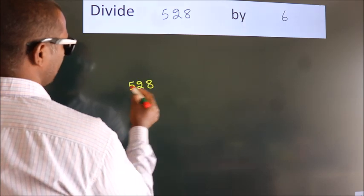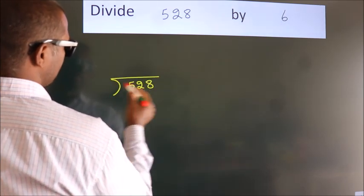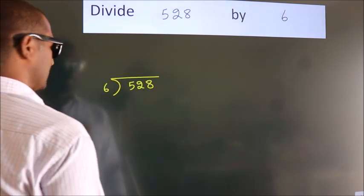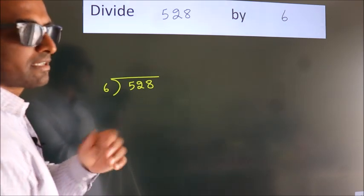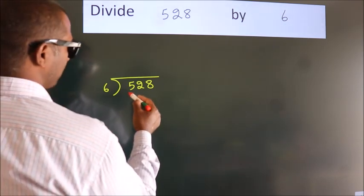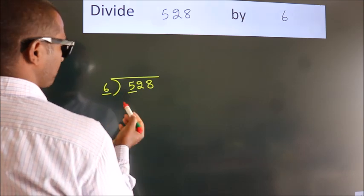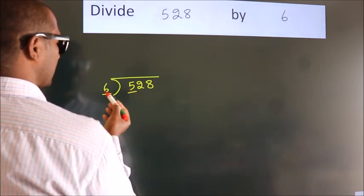528 here, 6 here. This is your step 1. Next, here we have 5, here 6. 5 is smaller than 6.